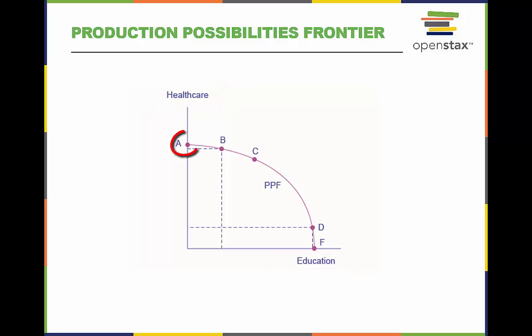At point A, all resources go to health care. And at B, most go to health care. At D, most resources go to education. And at F, all go to education.